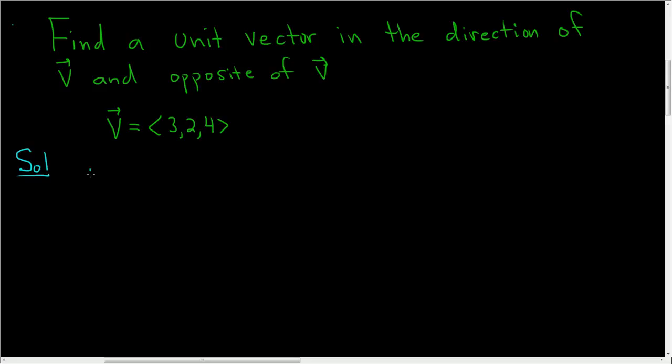A unit vector in the direction of v will be given by the following formula: 1 over the magnitude of the vector v, and then here we'll have the vector v. So this will be a unit vector in the direction of v. To find one opposite of v, we just multiply this by negative 1.